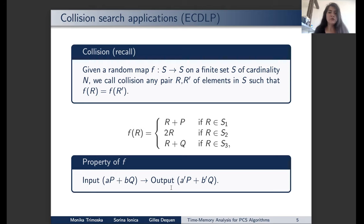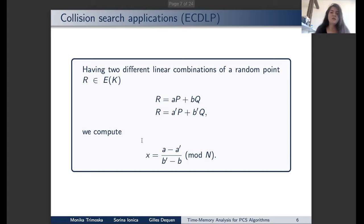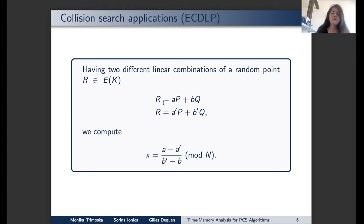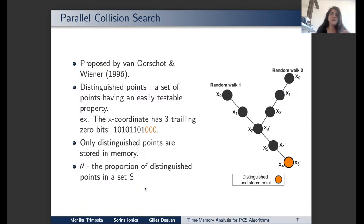How do we use this to find the discrete log? A collision occurs when we have two different linear combinations of the same random point R on the curve. Using this, and knowing that X times P equals Q, we can easily compute X.